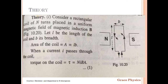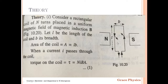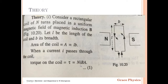Now for the theory: consider a rectangular coil of N turns placed in between a uniform magnetic field. Let L be the length of the coil, B be the breadth, and A equal to L into B be the area. N is the number of turns, I is the current flowing through the coil, B is the strength of the magnetic field, A is the area, and NIBA is the torque acting on the coil.